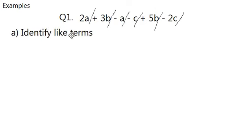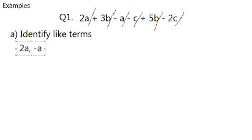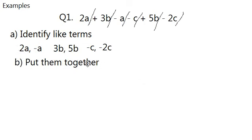And now go to step 1. We have to identify the like terms. So here we separate all the terms. We found A as one group, B as one group, and C as one group. And they will be 2A and A, 3B, 5B, minus 2C and minus C, or the other way around. It doesn't matter.